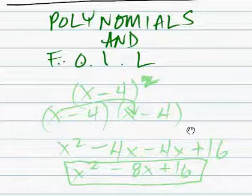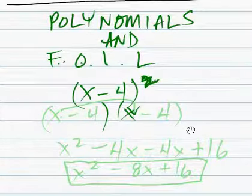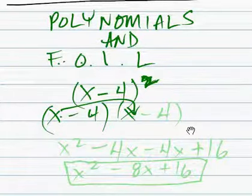So how do we FOIL this particular problem? X minus 4 to the second. Well, it's pretty easy. Just X minus 4 times X minus 4. You take those two binomials and you work them out.